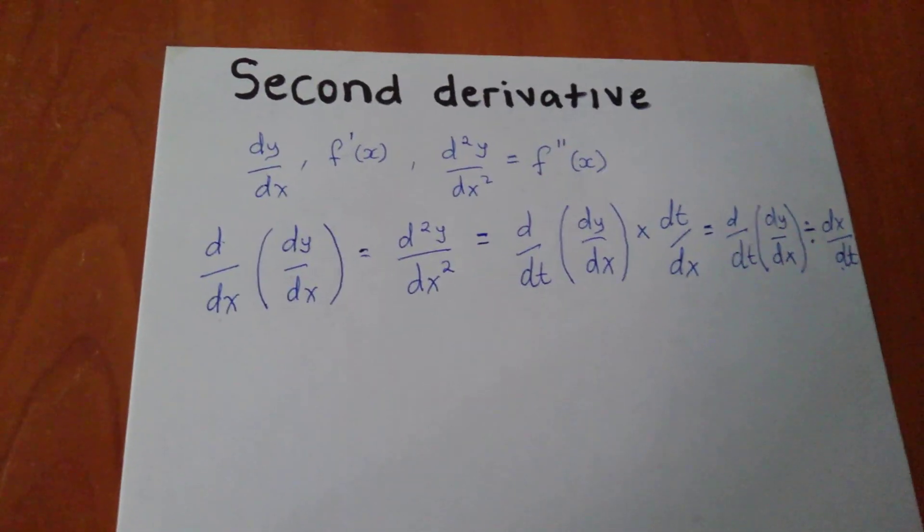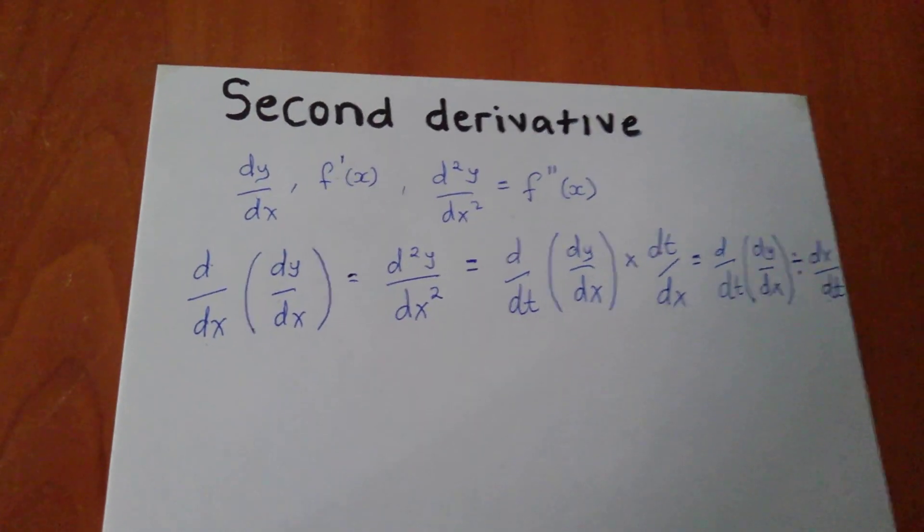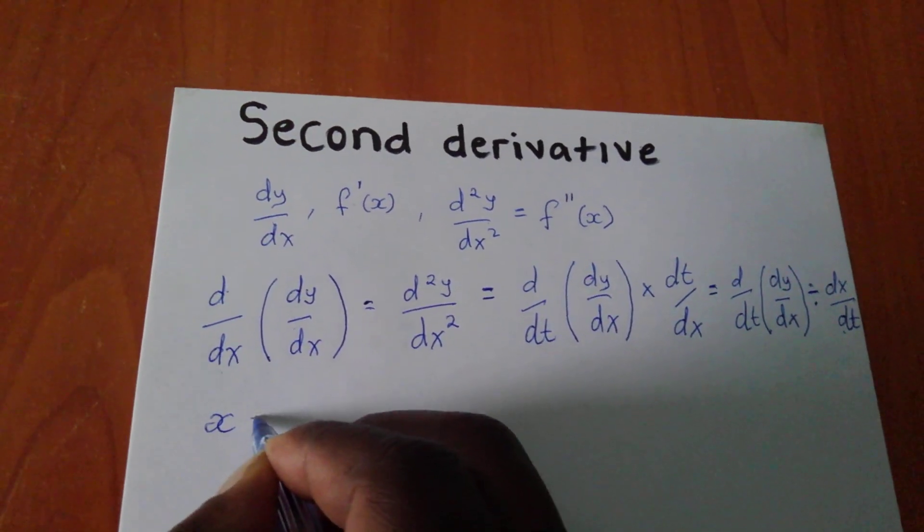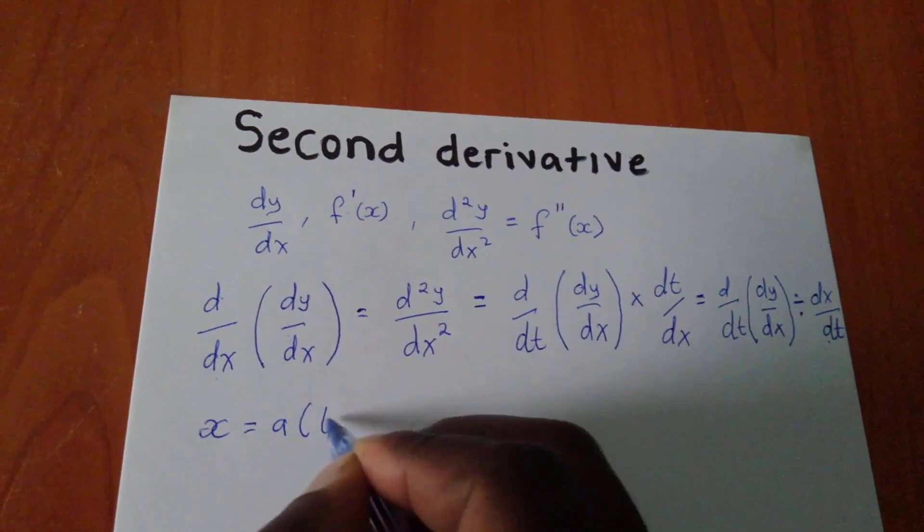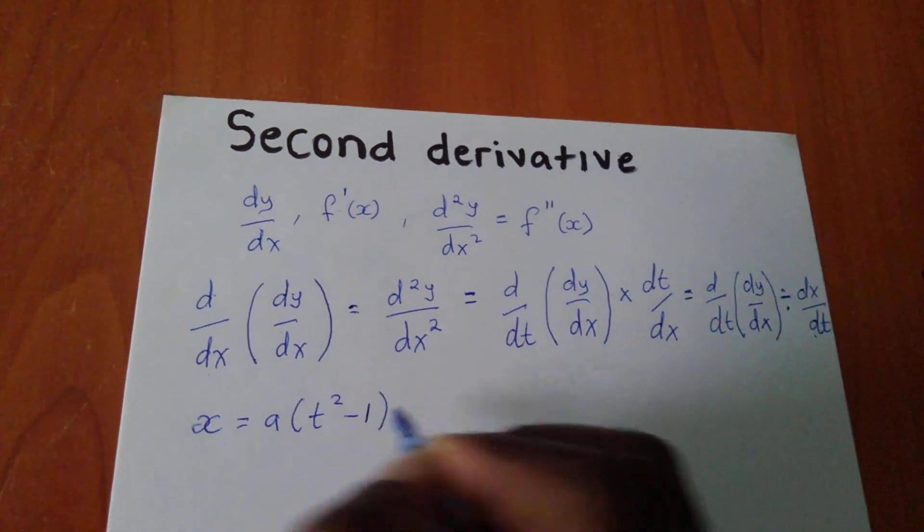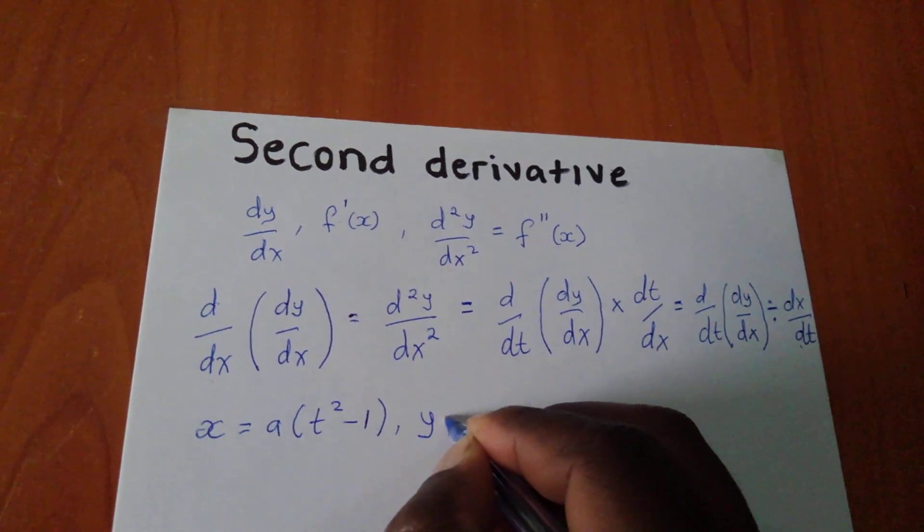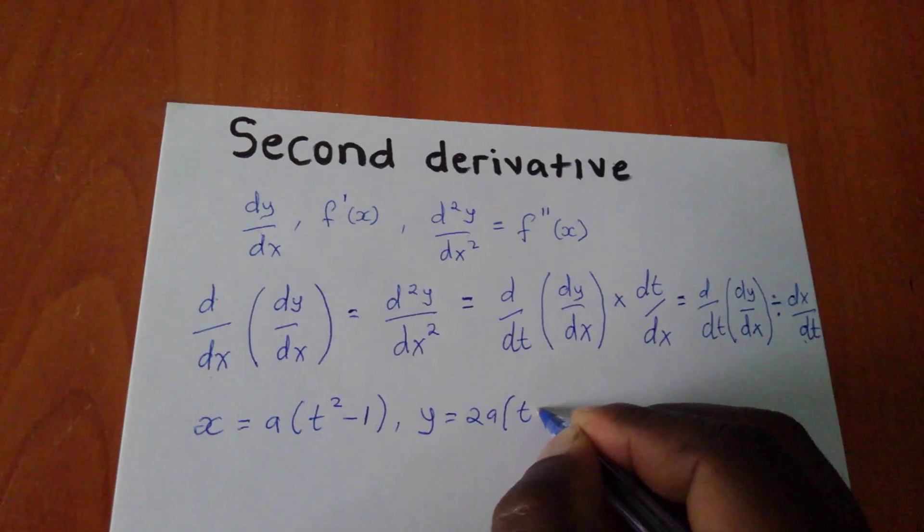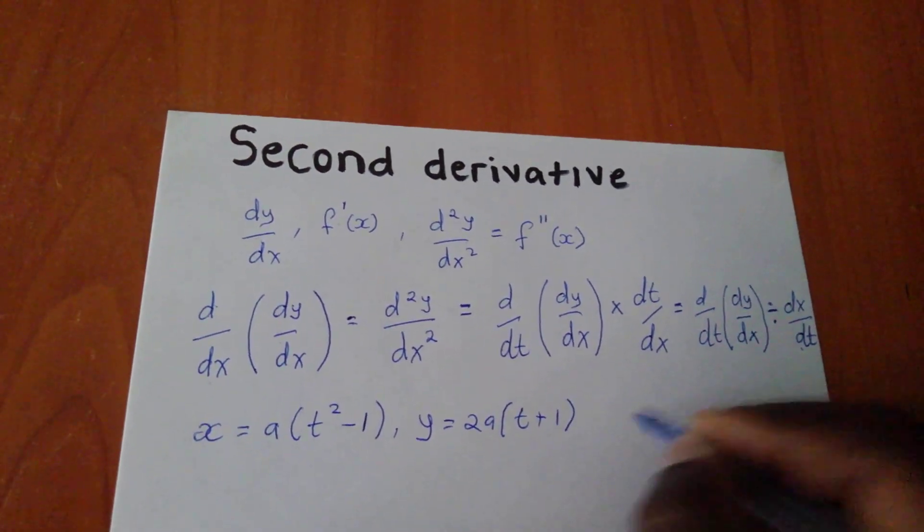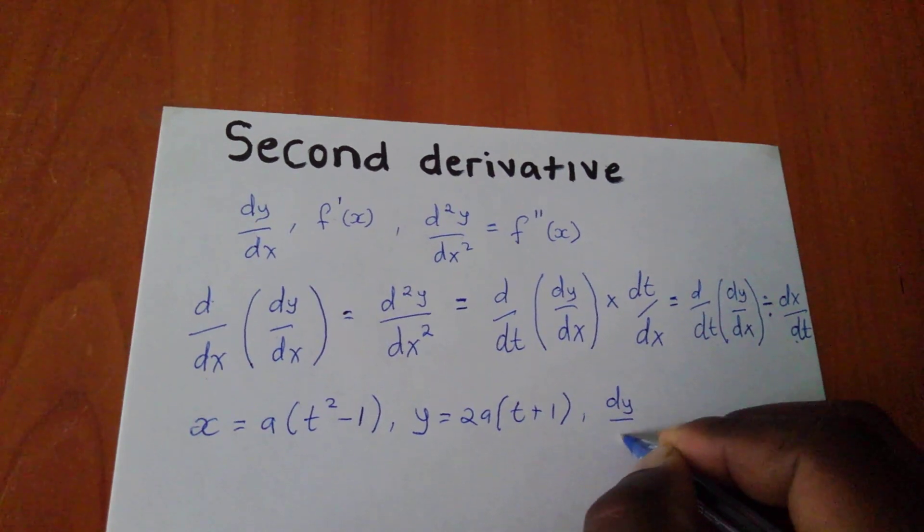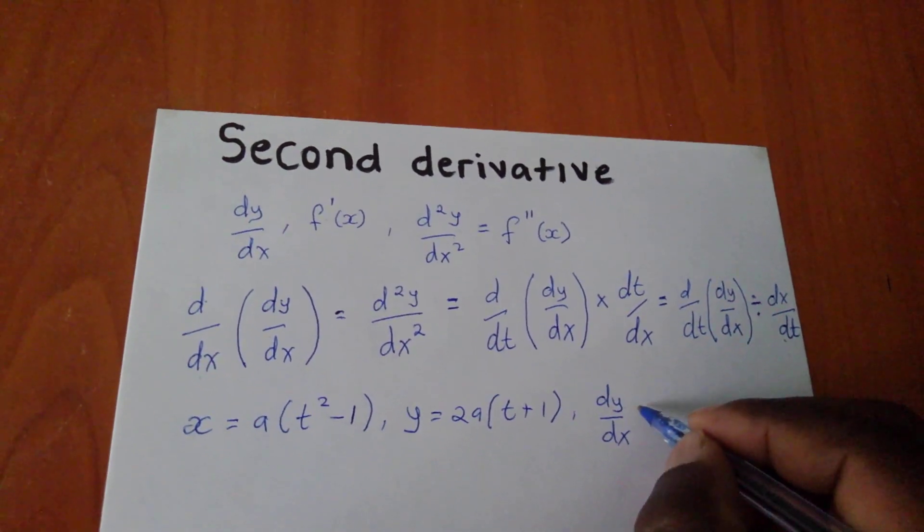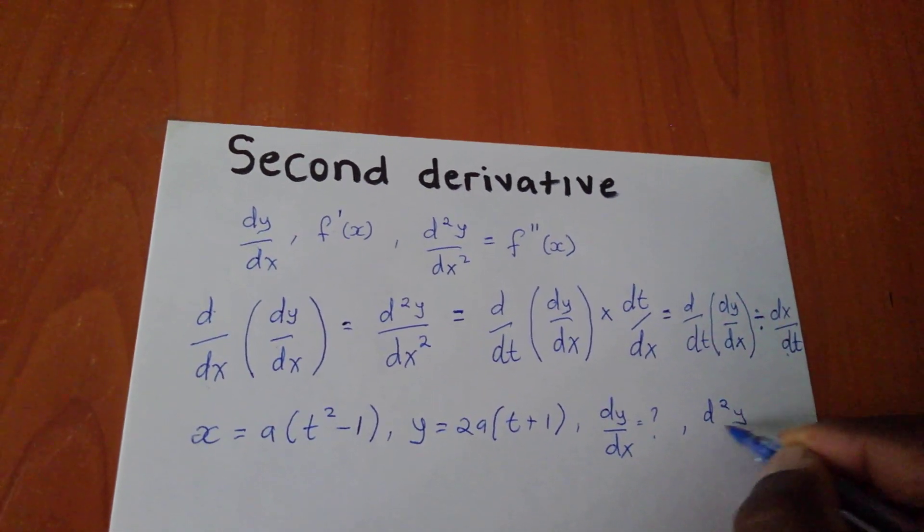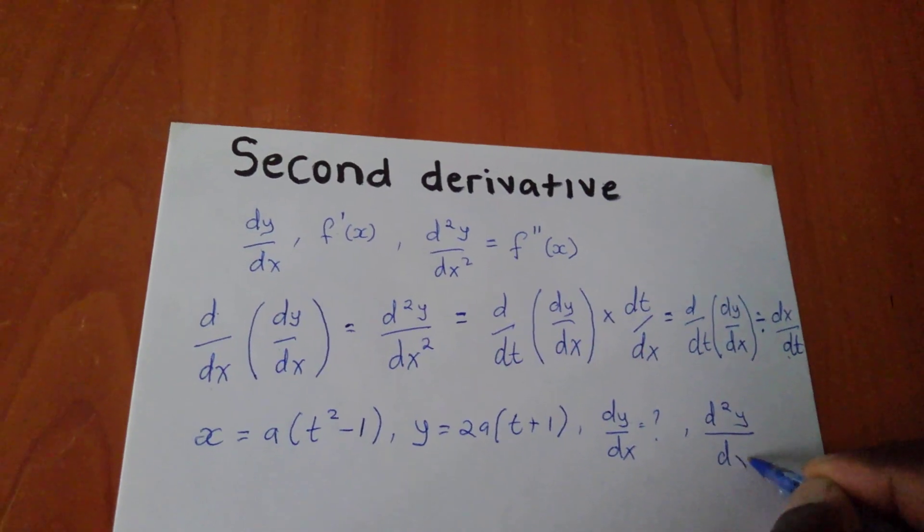And please follow, for you to be able to use such an expression. So suppose I am given my x as a(t²-1), and y to be 2a(t+1). And they want me to find dy/dx, also they want me to find the second derivative, which is d²y/dx².